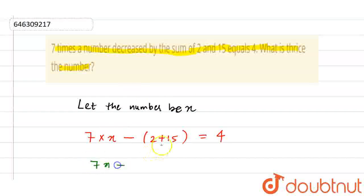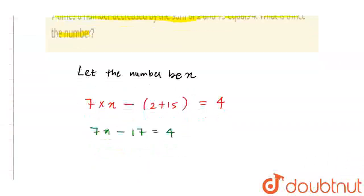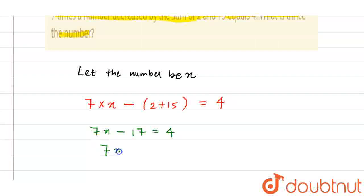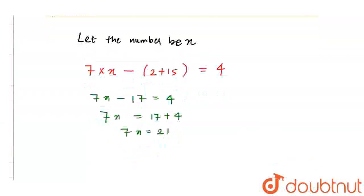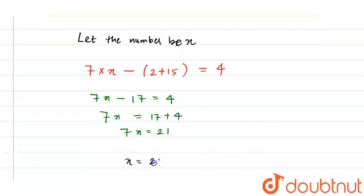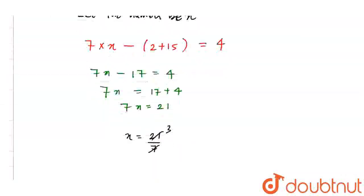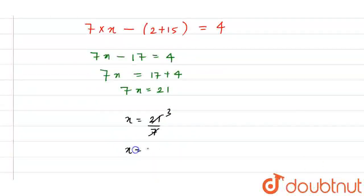What happens if we solve this? 7x minus, 2 plus 15 is 17, equals 4. Now, what is the value? 7x minus 17 inside, that equals 17 plus 4. Now, what is the value? 7x is equal to 21. So, x is equal to 21 by 7. It will cut, so what will we get? x is equal to 3.